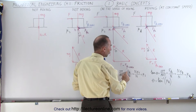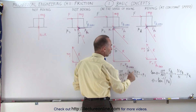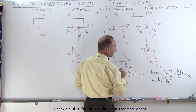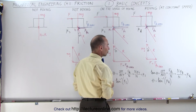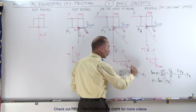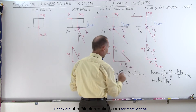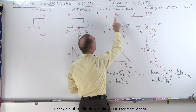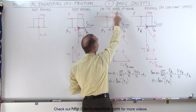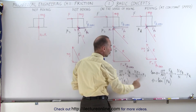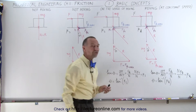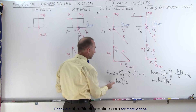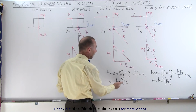The friction force by definition equals the normal force times the coefficient of friction — in this case the static coefficient of friction. The normal forces cancel out, so we can say that the tangent of this angle, where the block is on the verge of moving, equals the coefficient of static friction, which allows us to calculate the angle by taking the inverse tangent of the coefficient of static friction.